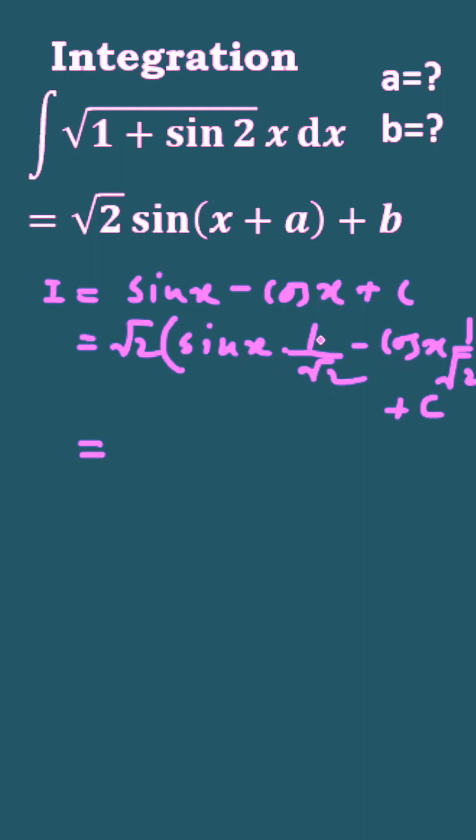Here, cos pi by 4 is equal to 1 by root 2 and you have to replace this, and also sin pi by 4 is equal to 1 by root 2.